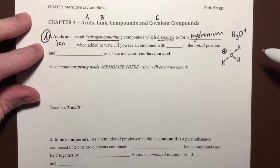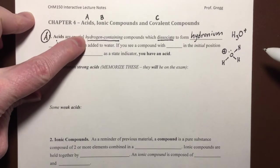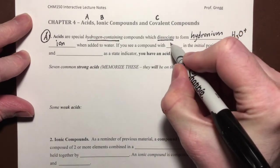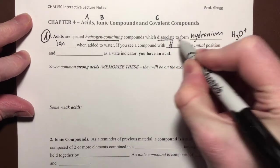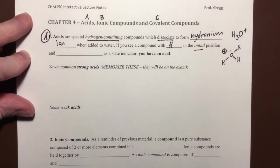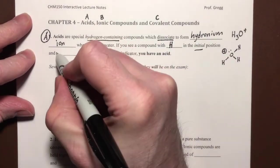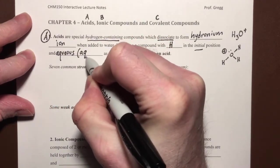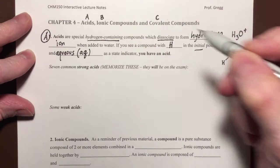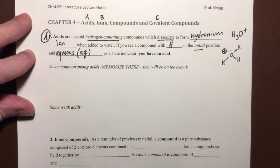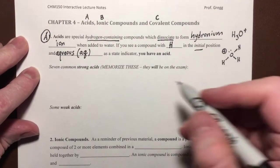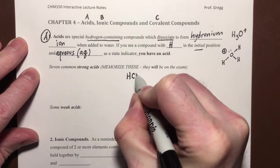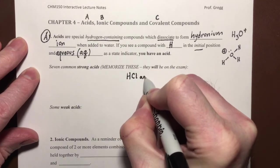To recognize an acid we know it's got to have hydrogen in it, and we know it has to be added to water. So if you see a compound with a hydrogen in the initial position of its formula, and it has an aqueous state indicator, and that's recall that that is AQ, then you have an acid. So I'll give you an example of an acid, one that you're probably more familiar with, HCl aqueous.